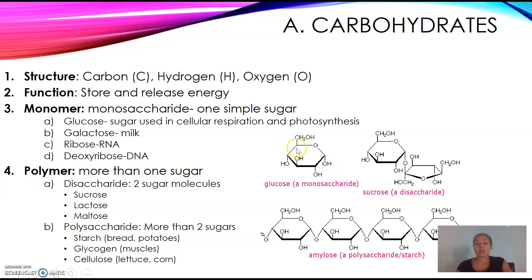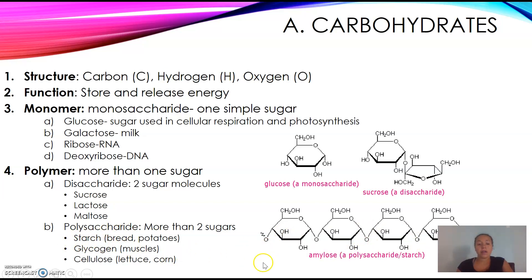The polymer is more than one sugar. It's a repeating unit — either two, a disaccharide, or many, a polysaccharide. Di means two, saccharide means sugar, so two sugar molecules. Examples are sucrose, lactose, and maltose. A polysaccharide is more than two — your monomer repeated over and over, all bonded together. Poly means many, saccharide means sugars. Examples include starch — like your bread — glycogen produced in muscles for energy, and cellulose found in lettuce and corn.